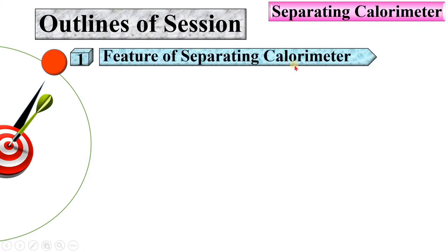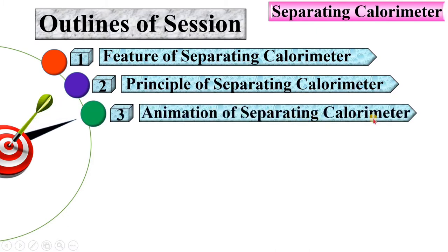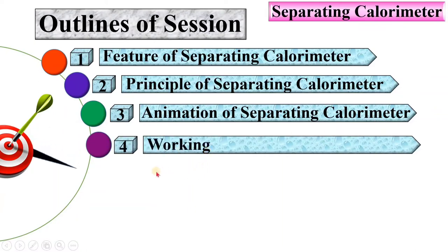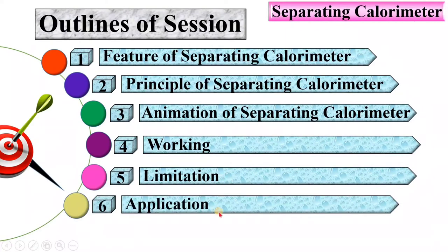The outline covers: features of separating calorimeter, then the principle of separating calorimeter, next an animation of separating calorimeter, then the working of separating calorimeter, next the limitation of separating calorimeter, and finally the application of separating calorimeter.